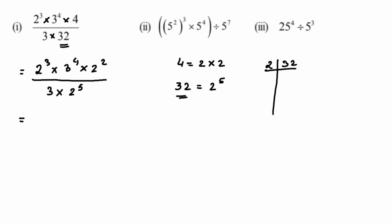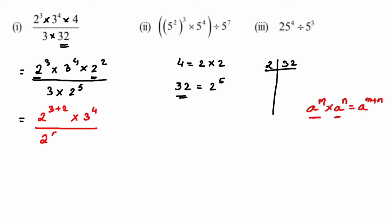Now I'll apply the laws. Looking at 2 to the power 3 and 2 to the power 2, the bases are same but powers are different. The law is: a to the power m multiplied by a to the power n equals a to the power m plus n. When bases are same, just add the powers. So we get 2 to the power 3 plus 2, multiplied by 3 to the power 4, divided by 2 to the power 5, multiplied by 3.